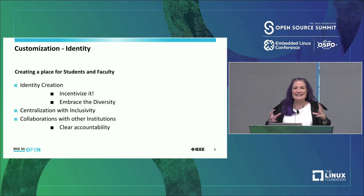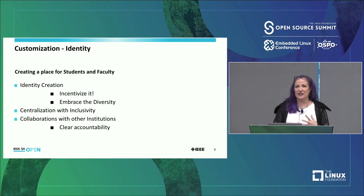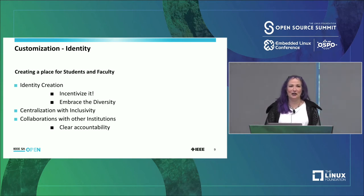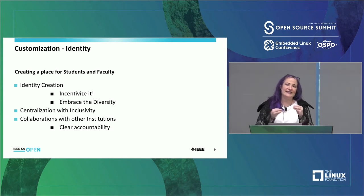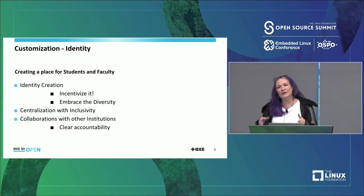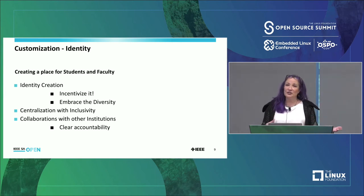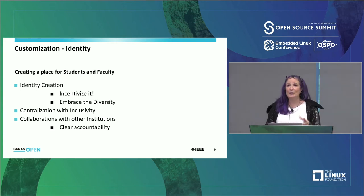The next area is identity. Universities understand this better than most — alumni, right? For this, we can incentivize. A lot of groups have been saying they don't know where their developers are, where their open source is, where things are happening. If you have a centralized spot where people can be inclusively brought in and incentivized, they will actually come to you rather than you chasing them everywhere. And you can also make it easier to collaborate with other institutions.